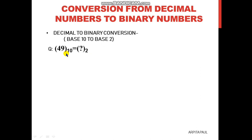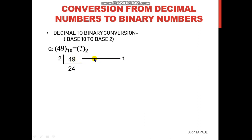Let me show you with one example. Let's take the value 49 in base 10 — how much is it in base 2? This 10 is the base of the given number, and this 2 is the base of the number we need to find. For any decimal number conversion — base 10 to any other base — we divide the number with that given base. So here we will divide 49 by 2. So 2 times 24 is 48, remainder 1. We write the remainder on the right hand side.